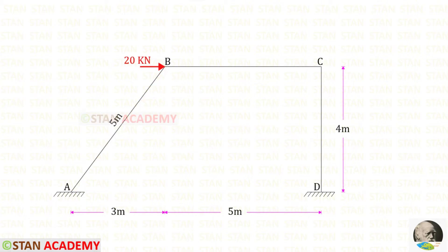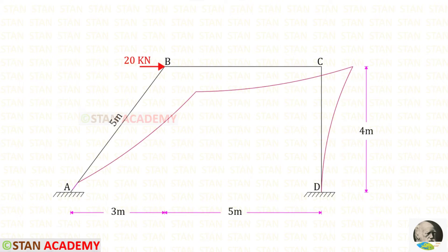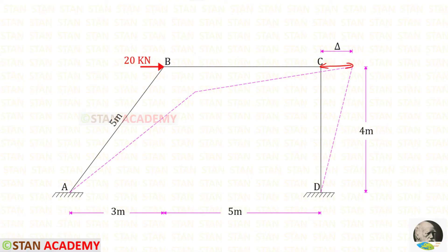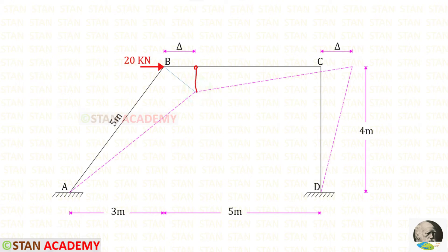Let us see how the displacement occurs in this frame. Due to this nodal point load, the frame will deflect in this shape. Now we can connect points A, B, C, and D in their displaced positions. This horizontal distance can be taken as delta, which is the sway. From point B, we can also mark the sway. Let us draw a vertical line and connect that point to point B. Let us name this height as delta-vertical and this inclined length as delta-inclined.